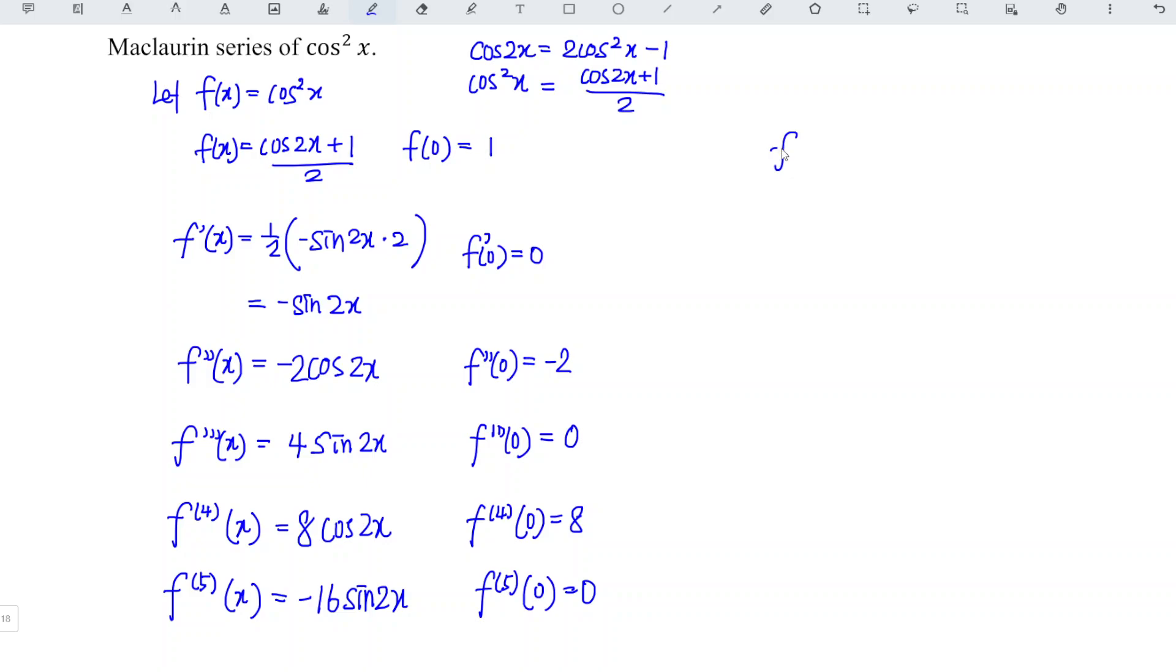And for the sixth time, sine 2 times 16, 32. So sine differentiate cos. So at the point 0 is equal to negative 32.